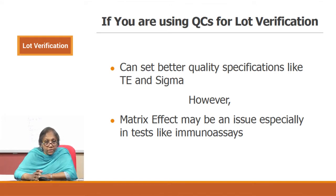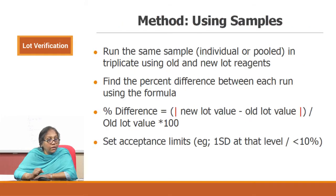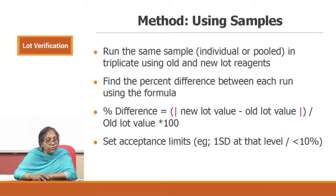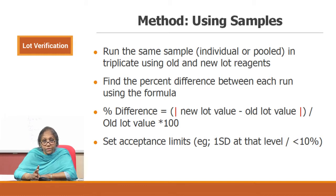Both methods are advisable — it is your choice. For the sample method, you may need to pool samples because if you are going to run the same sample with the new lot and the old lot in triplicate, that calls for 6 runs consecutively. So it can be done using individual or pooled samples in triplicate using the old and new lots of reagents.